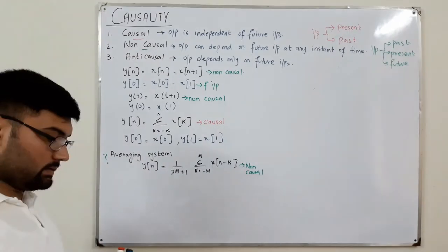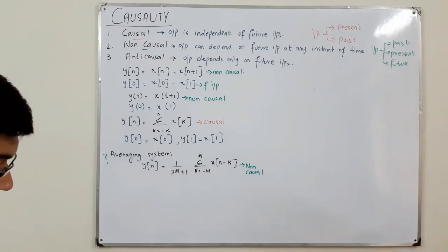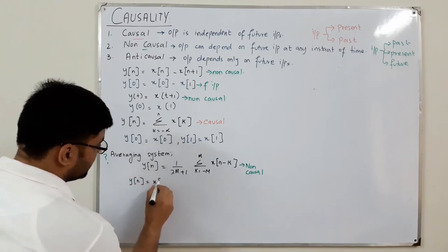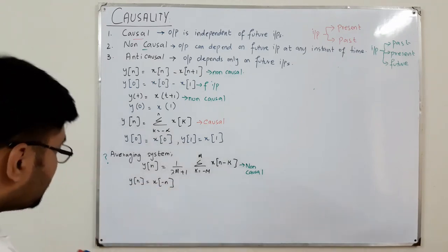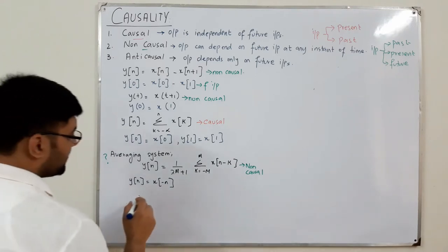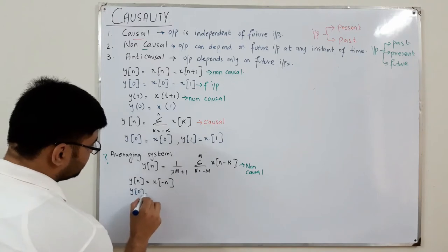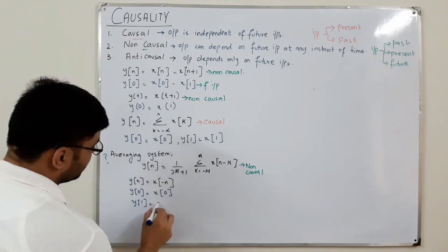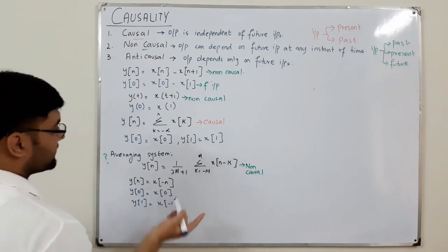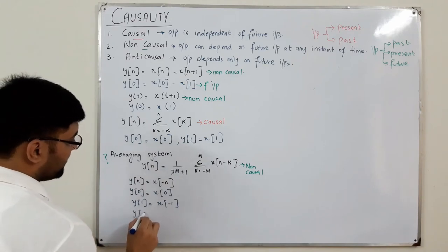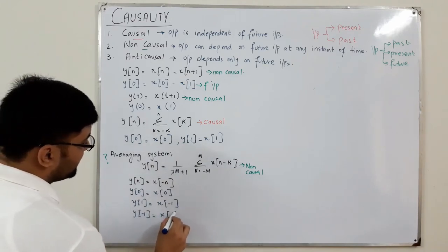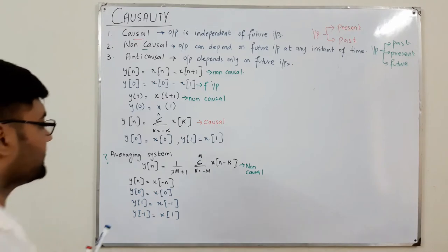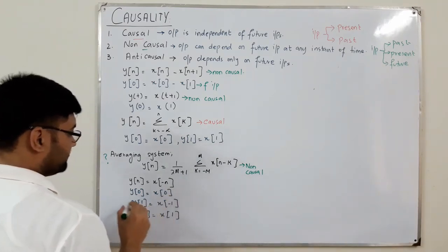For y[n] = x[-n]: checking y[0] gives x[0], which is the present value. But checking y[1] gives x[-1], a past value, and checking y[-1] gives x[1], which is a future value. Since it depends on future values at some instants, this is a non-causal system.